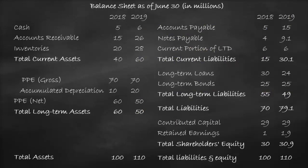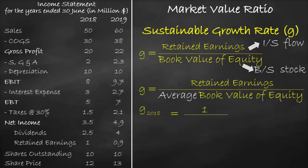Please note that 2018 is the first year of operations. Consequently, we do not have the average of the shareholders' equity as we do not know what the previous year is. We have shareholders' equity in the year 2018 of $30 million. Therefore, book value of equity is $30 million, which gives us 3.33%.